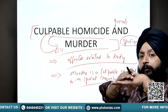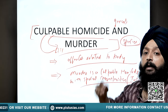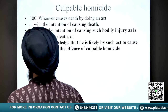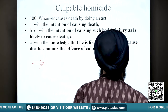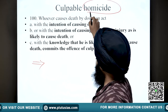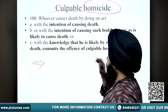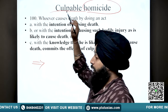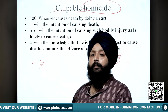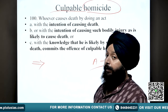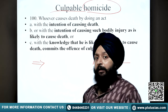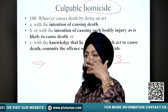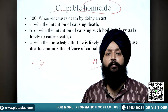First we have culpable homicide, then we have its gravest form, that is murder. Now, homicide means killing of a person - if A shoots B, that is homicide. Culpable homicide means homicide or killing of a person that is an offense or that is punished according to law. That means there must be some killings that are not culpable or that are not punished by law.